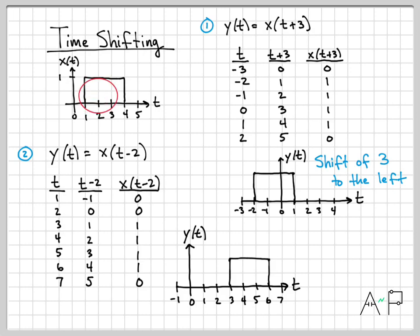Again, initially, x of t was on from 1 to 4. After performing this time shift operation, it's now on from 3 to 6. It has shifted two units to the right, just like we thought it should have based on the previous chart.